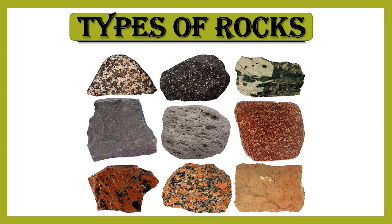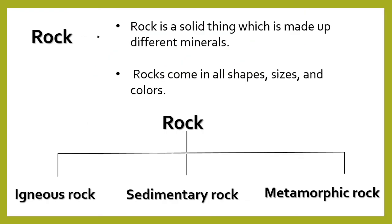Types of Rock. Rock is a solid thing which is made up of different materials. Rocks come in all shapes, sizes and colors. There are three kinds of rocks: igneous rocks, sedimentary rocks and metamorphic rocks.